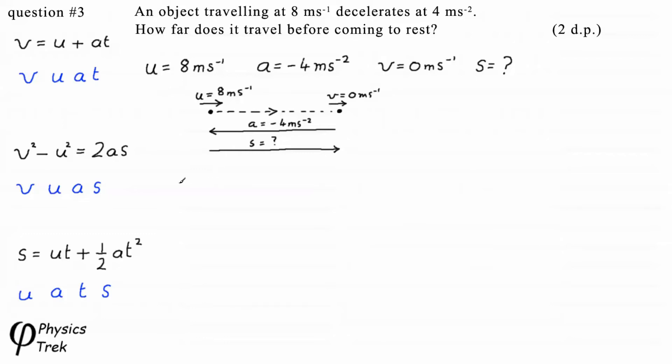So let's write out our equation. V squared minus U squared equals 2AS. We need S to be the subject. So let's just turn this around. 2AS is equal to V squared minus U squared. We divide both sides by 2A to leave the S on its own.